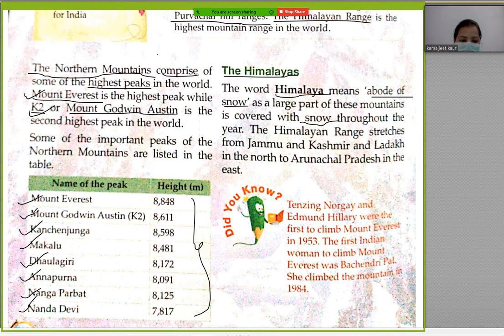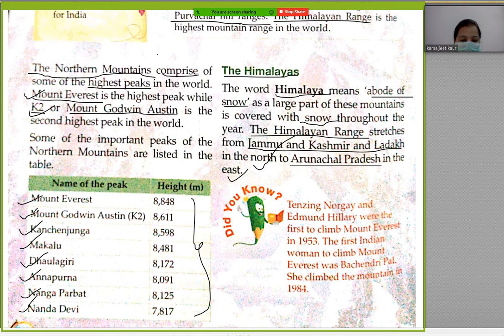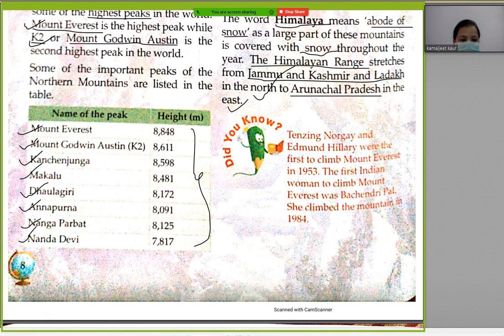The Himalayan range stretches from Jammu and Kashmir and Ladakh in the north. So the Himalayan range starts from Jammu and Kashmir and Ladakh in the north.